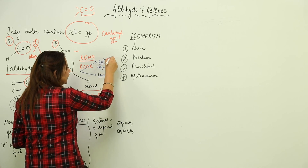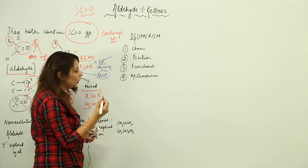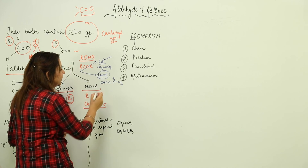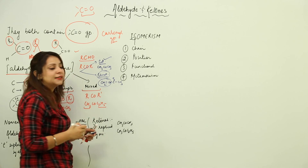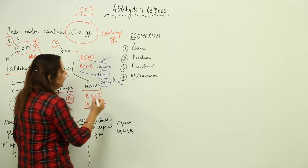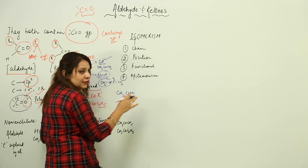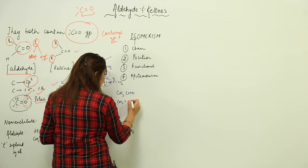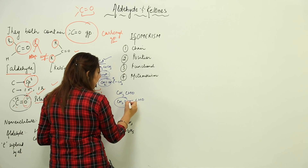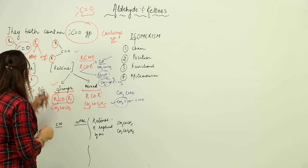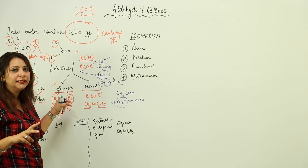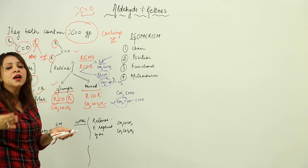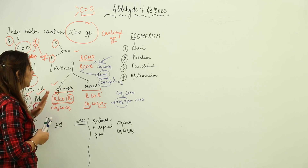A saturated ketone has all single bonds in its chain. An unsaturated ketone contains at least one double or triple bond in its structure. Similarly, for aldehydes: if the bonds between carbons in the chain are all single bonds, it is a saturated aldehyde; if there is at least one double or triple bond present, it is an unsaturated aldehyde. This saturated/unsaturated classification applies to both aldehydes and ketones.